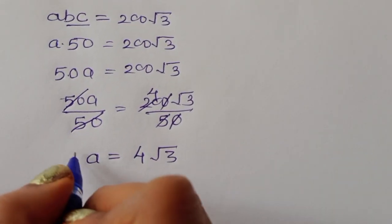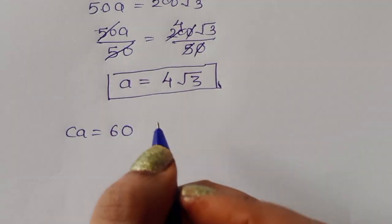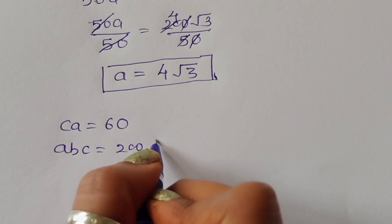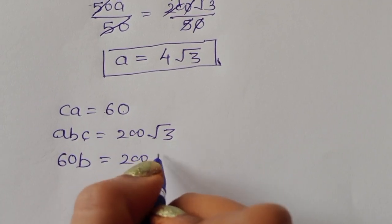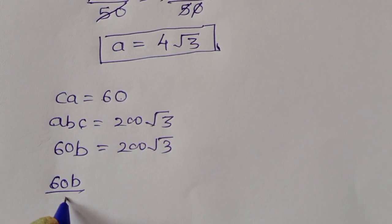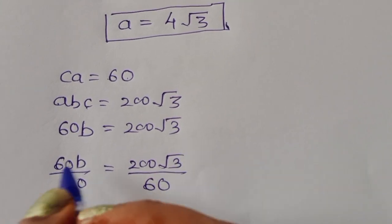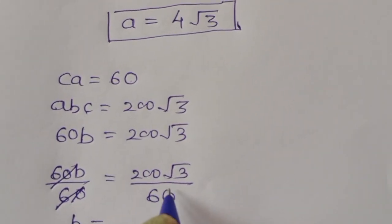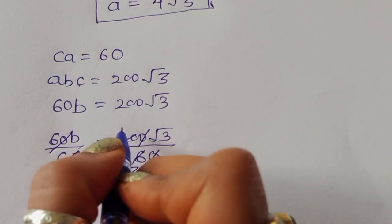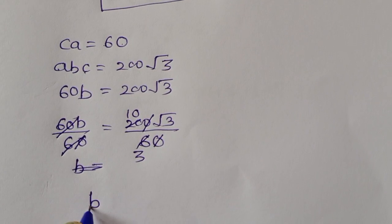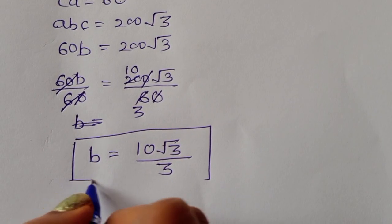From equation three, ca = 60, so abc = 60b = 200√3. Dividing both sides by 60, b = 200√3 ÷ 60. Simplifying by dividing numerator and denominator by 3, b = 10√3 ÷ 3. So b = 10√3/3.